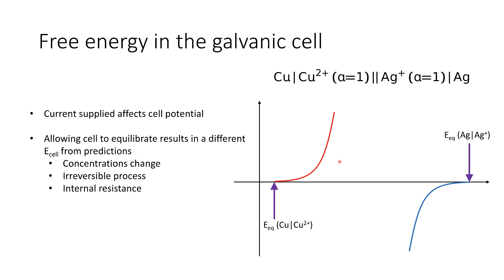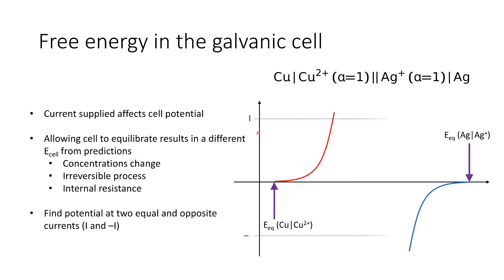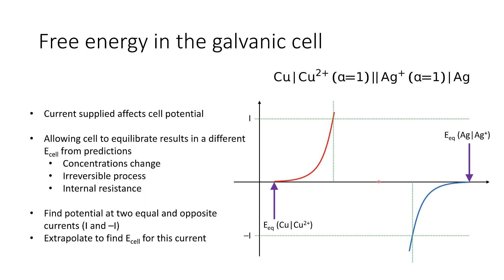To identify how the cell potential varies with current, we need to find the potential at two equal and opposite currents. In order to drive a particular positive current, we need a particular anodic potential, and to drive a negative current, we need a particular cathodic potential. The difference between these new potentials lets us extrapolate to find the actual measured cell potential for that current. As the current increases, the cell potential drops. We only obtain the thermodynamically predicted cell potential under zero current conditions — as soon as current starts to flow, we deviate from that equilibrium position.